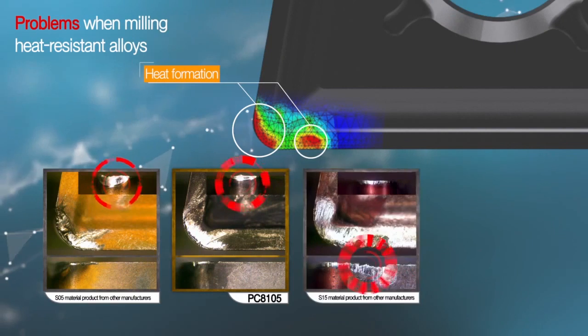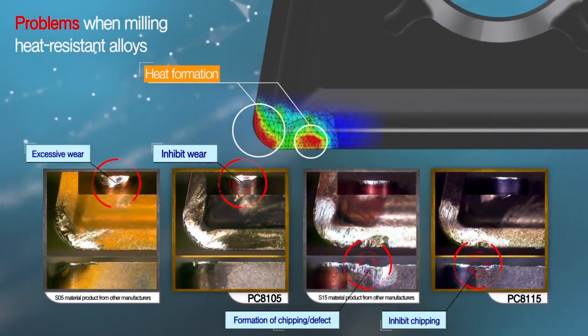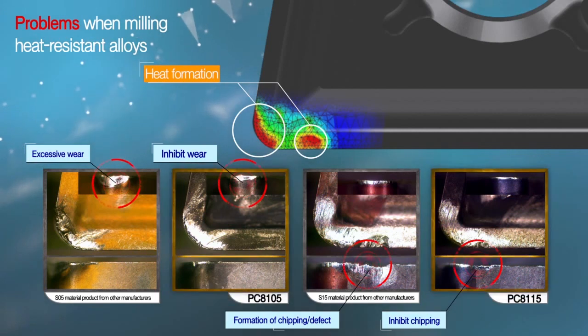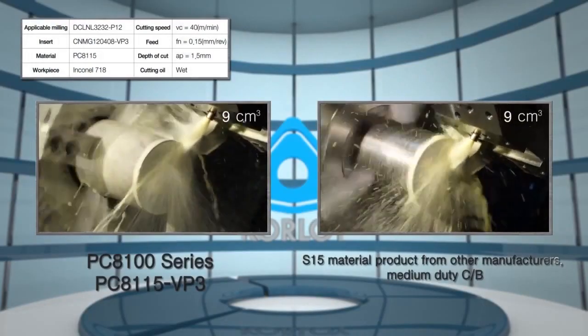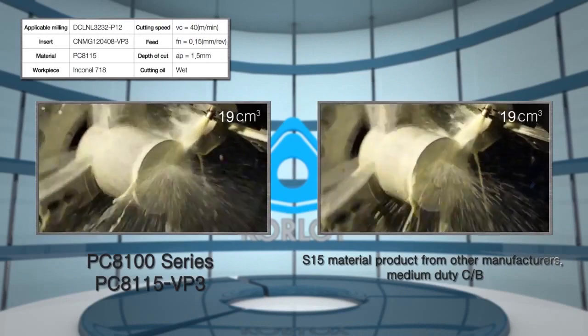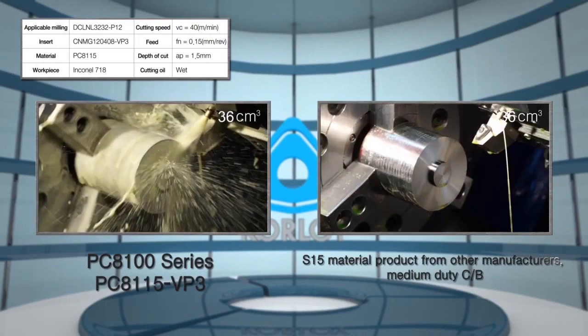PC8100 series inhibits rapid wear and chipping formed as a result of concentration of high temperature during machining of heat-resistant alloys. In addition, it provides more stable machinability with excellent wear resistance and chipping resistance in high temperature.